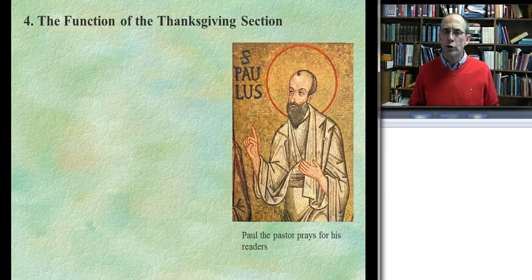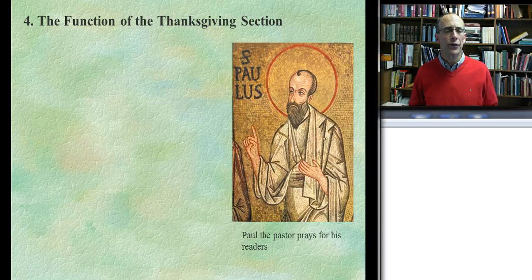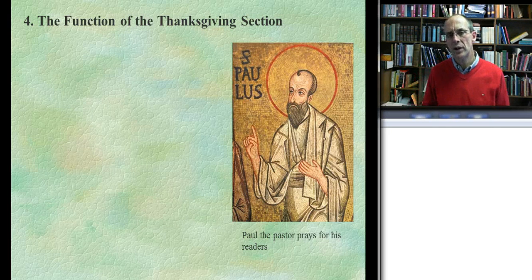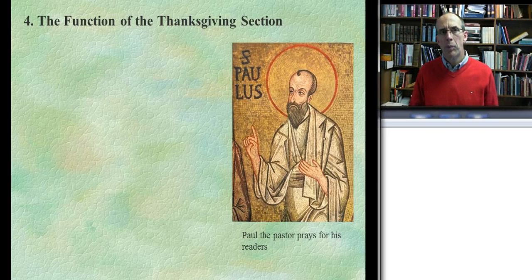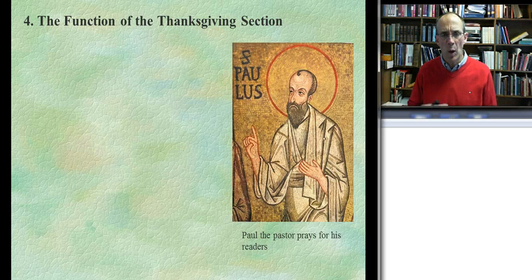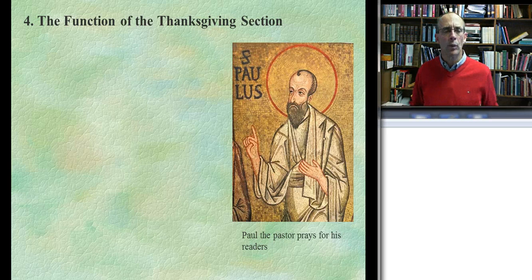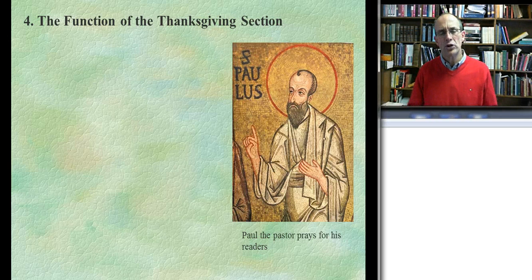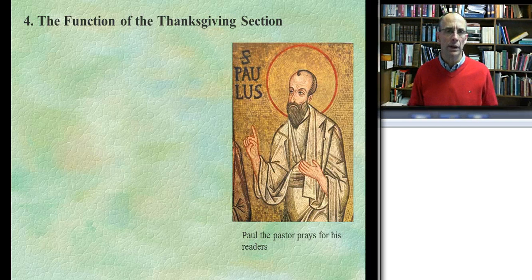So far we've been introduced to the Thanksgiving section, and we've had a brief discussion on its source and its form or structure. Now we turn to the most important question, and that is its function. Because Paul could have — after all he can do whatever he wants as the letter writer — jumped directly from the opening to the body of the letter. So you have to ask yourself, why does he have this extra material? There are three functions that are important for us to identify when we read these epistolary units in Paul's letters.